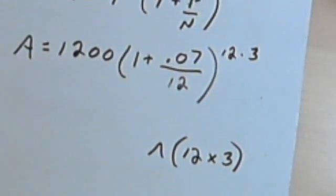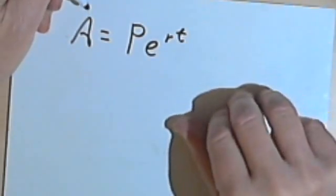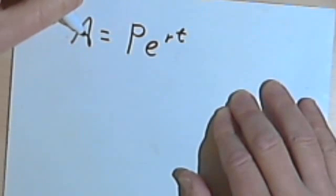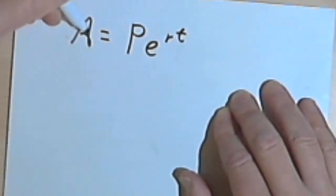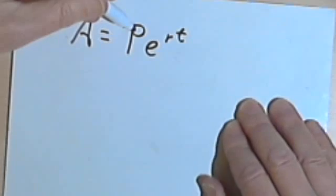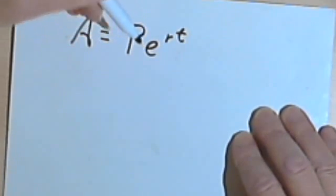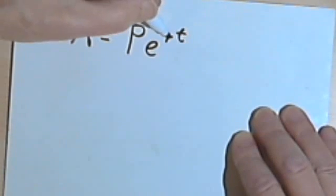Now there's another way to calculate interest, this is called continuously compounded interest. In this case, in theory, the bank compounds the interest every second. The formula they use is this: A equals P times e to the rt. A is the amount of money you get back, P is the principal, e is a number, it's a number like pi, it's 2.12 something, it goes on forever. And then we're raising it to the rt, which is the rate as a decimal times the time, the number of years.